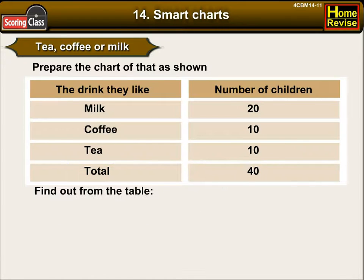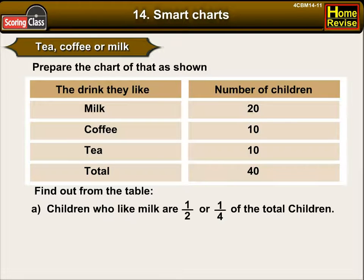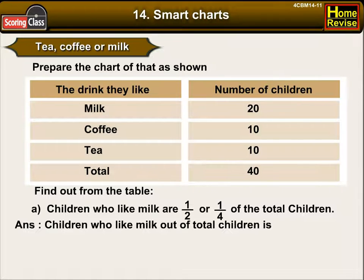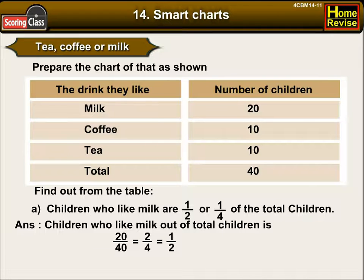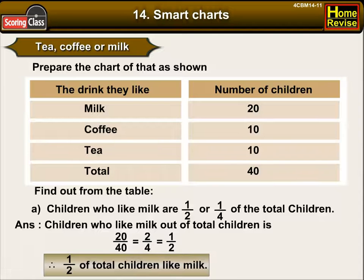Find out from the table. A: Are children who like milk half or one-fourth of the total children? Children who like milk out of total children is twenty upon forty, which is two upon four, which is one upon two. Therefore, half of total children like milk.